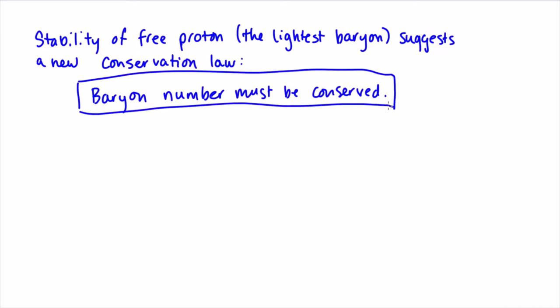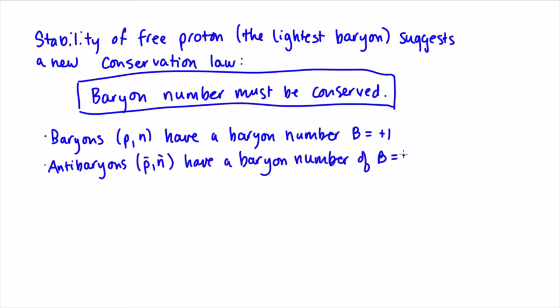Baryon number must be conserved. Baryons are assigned a quantum number of B equals plus 1, and antibaryons are assigned a quantum number of B equals minus 1.